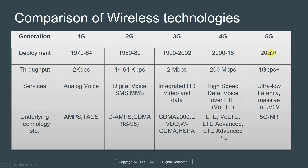In the 5G era, coming around 2020 and beyond, we will see throughputs in excess of 1 gigabit per second. The services will include ultra-low latency, massive IoT (Internet of Things), and vehicle-to-vehicle communication. The underlying standard is primarily 5G New Radio. We won't go into details of 5G in this course — that's a separate topic. Here we are focused on 4G, specifically LTE Advanced and LTE Advanced Pro.